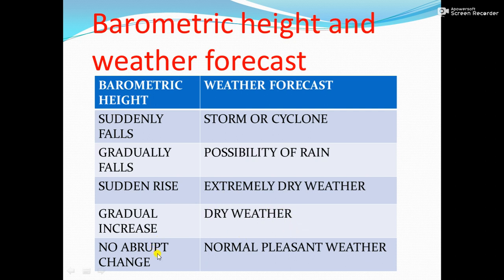The last case is if there is no abrupt change — barometric height is normal — meaning normal, pleasant weather. That is all about this presentation. Hope you all understood the concept about weather forecasting and the instruments used to measure atmospheric pressure. Stay connected, I will be uploading more videos. Thank you.